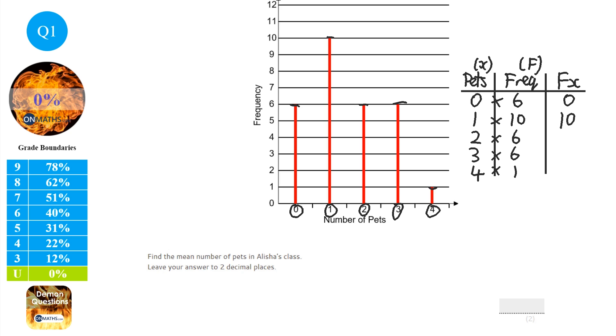Those 6 people who had 2 pets, well how many pets are there in total? Well 2 times 6, which is 12. There were 6 people with 3 pets, so that's 18 pets altogether, and there was 1 person with 4 pets, so that's 4 altogether.